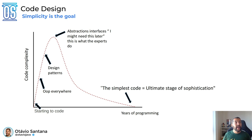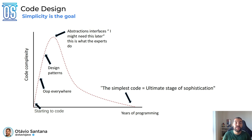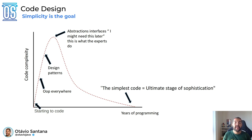The last point is simplicity. I love this graph because it reflects my own journey: I started coding simply, then learned design patterns and tried to put everything into a singleton just because I knew how — without understanding why. Over time I realized patterns are meant to make life easier for me and my colleagues. I should use them only when they make my code simpler and more readable. Simplicity is the ultimate stage of sophistication, and that's what the ultimate engineer pursues.